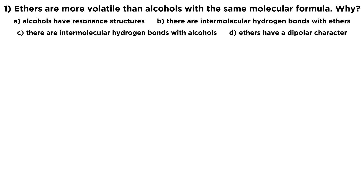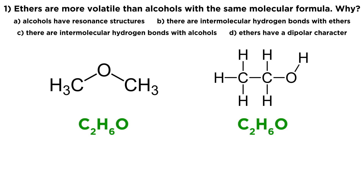For this first one, we're looking at ethers and alcohols with the same molecular formula. Ethers are more volatile, which means they more readily enter the gas phase — they more readily go from liquid to gas. Let's draw some examples: dimethyl ether and ethanol are both C₂H₆O, so these are structural isomers of one another, meaning they have the same molecular formula, but one is an ether and one is an alcohol.